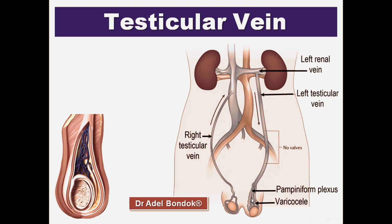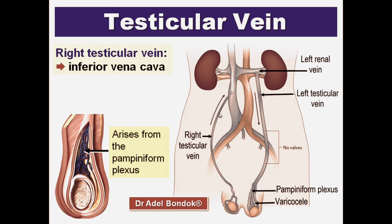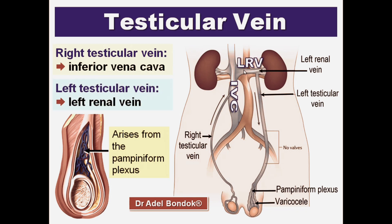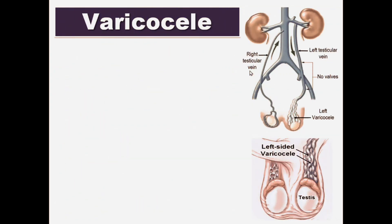The pampiniform plexus of veins forms the testicular vein. The right testicular vein terminates in the inferior vena cava. The left testicular vein terminates in the left renal vein.